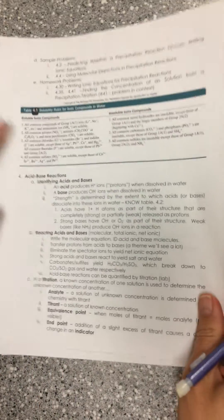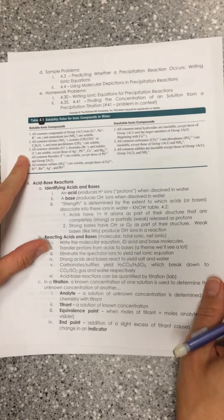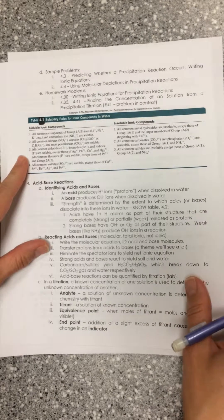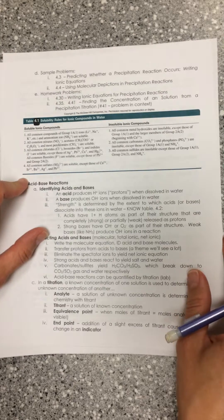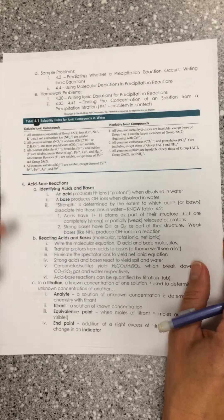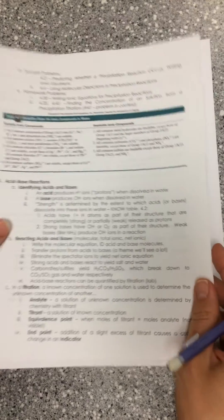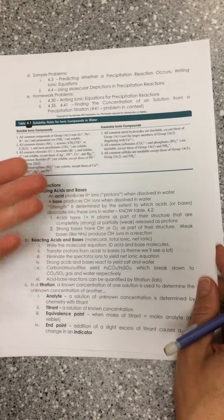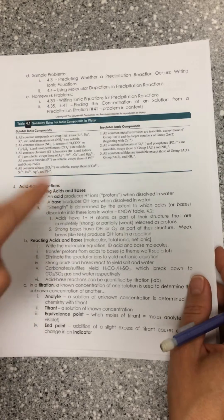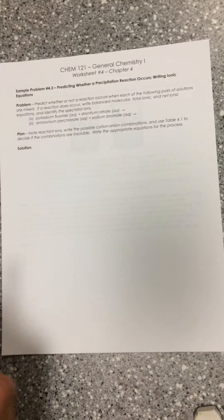With precipitation reactions, we need to refer to Table 4.1, because once we mix soluble ions together, we'll have the potential of new pairings that can form. We have to reference this table to see whether those new pairings are soluble or not. If they're insoluble, that means we form a precipitate, and you need to write a little S indicating you formed a precipitate or something solid.